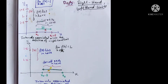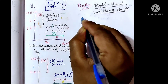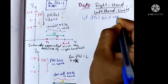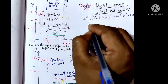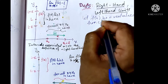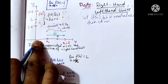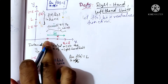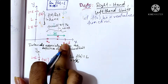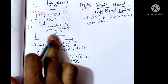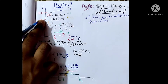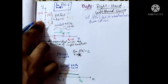In this lecture, we learn about the right-hand and left-hand limit of a function. Let f be a real-valued function. In the picture, x₀ is a point, and x lies between x₀ and x₀ plus delta. This distance is delta, and l is the right limit of the function f(x).